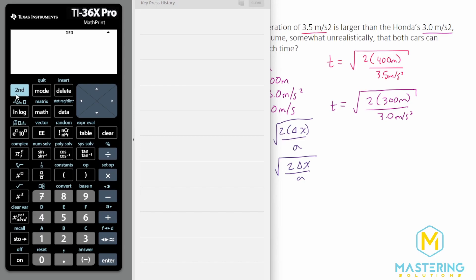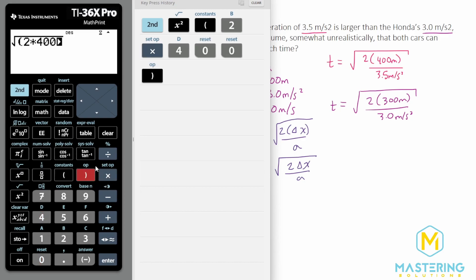So for the Porsche, we have the square root of 2 times 400 divided by 3.5 gives us a time of 15. We'll just round down to 15 seconds. And now we'll do the exact same thing for the Honda.